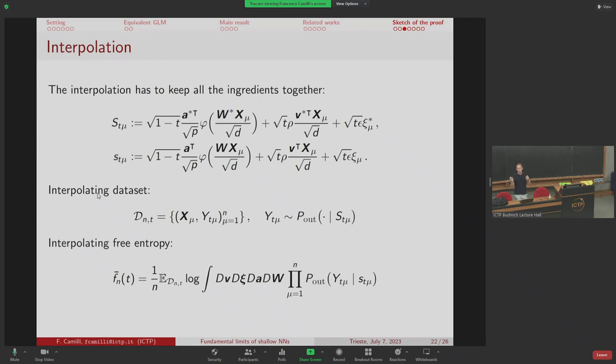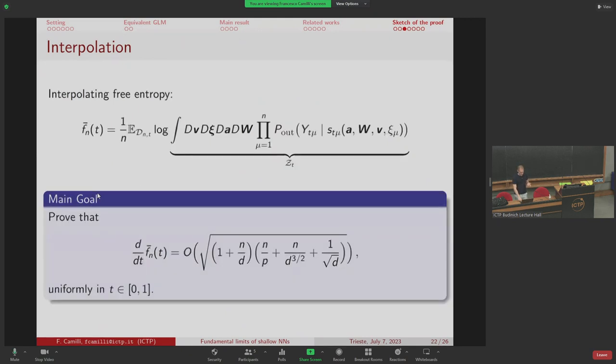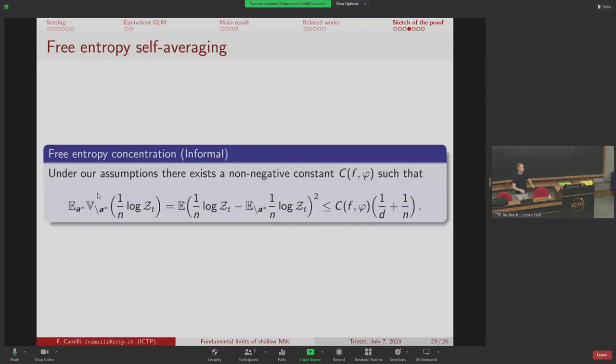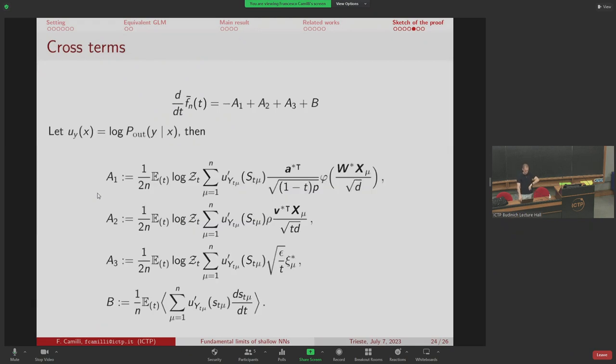We have this interpolating free entropy. For t equal to 1, we have the free entropy of the GLM that we know to compute thanks to Jean et al. For t equal to 0, you have your model which you're actually interested in. To control the difference between these two, the simplest thing is to compute the derivative and hope for a uniform control in time with the same order as in the statement of the theorem. We need the concentration of the free entropy which is stated in this form.